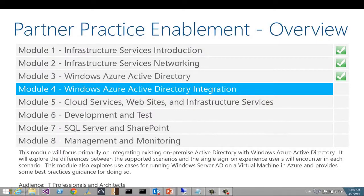Welcome to Module 4 of the Partner Practice Enablement Bootcamp for Windows Azure. In this module, we will look at Windows Active Directory and Windows Azure Integration. This module will focus primarily on integrating existing on-premise Active Directory with Windows Azure Active Directory. We'll also explore the differences between the supported scenarios and the single sign-on experience that users will encounter in each scenario. We will also look at use cases for running Windows Server Active Directory on a virtual machine in Windows Azure and provide some best practices for this scenario.